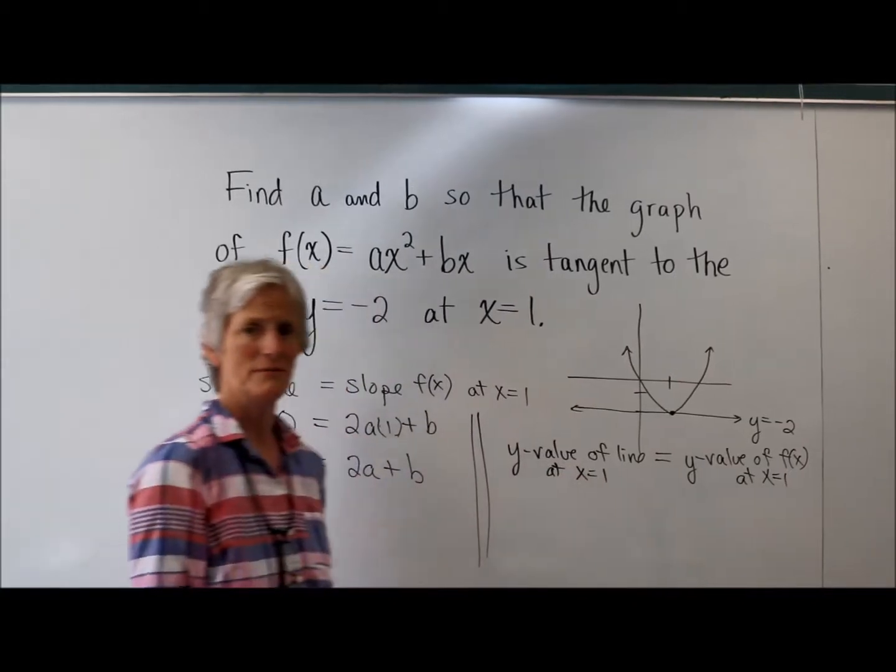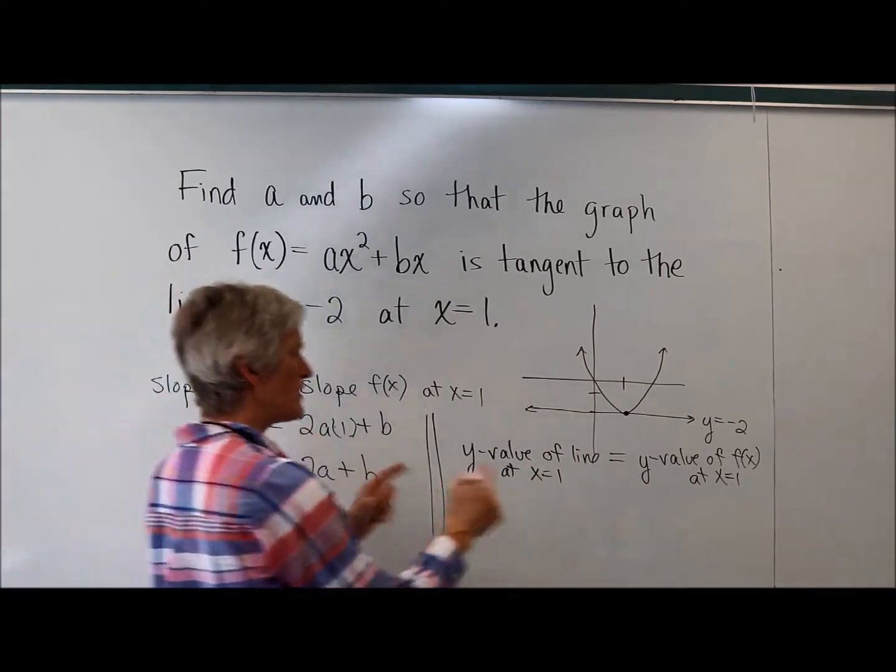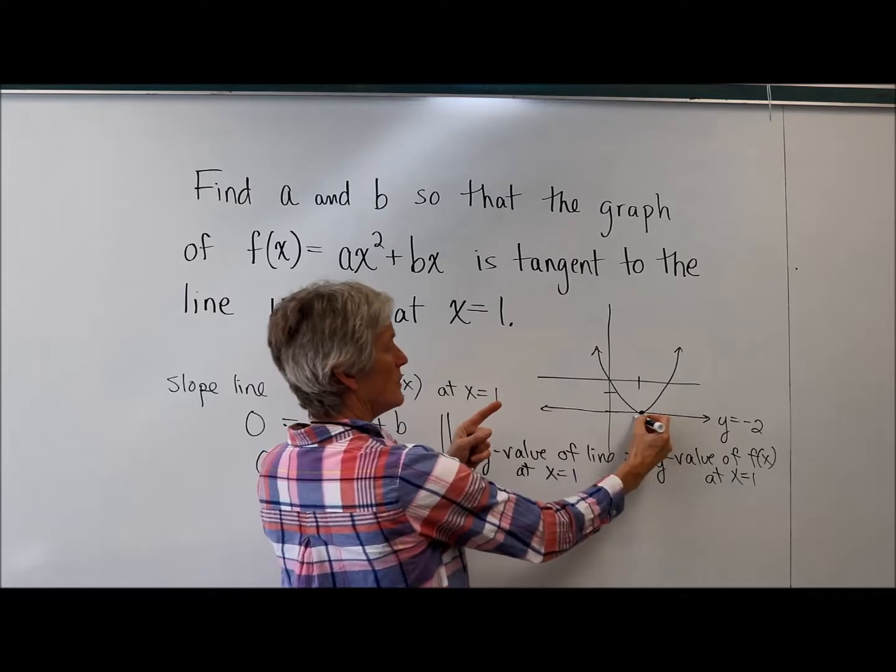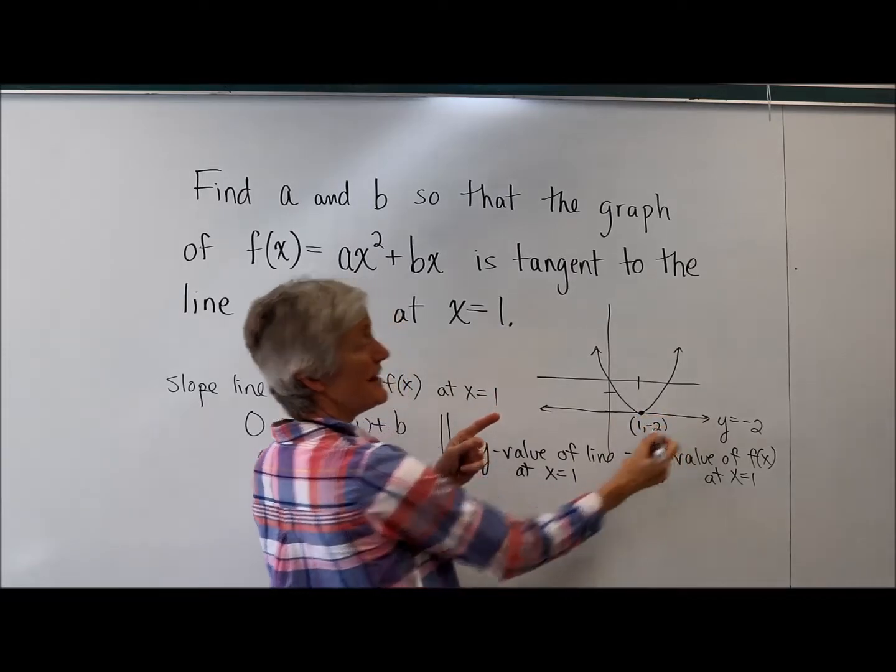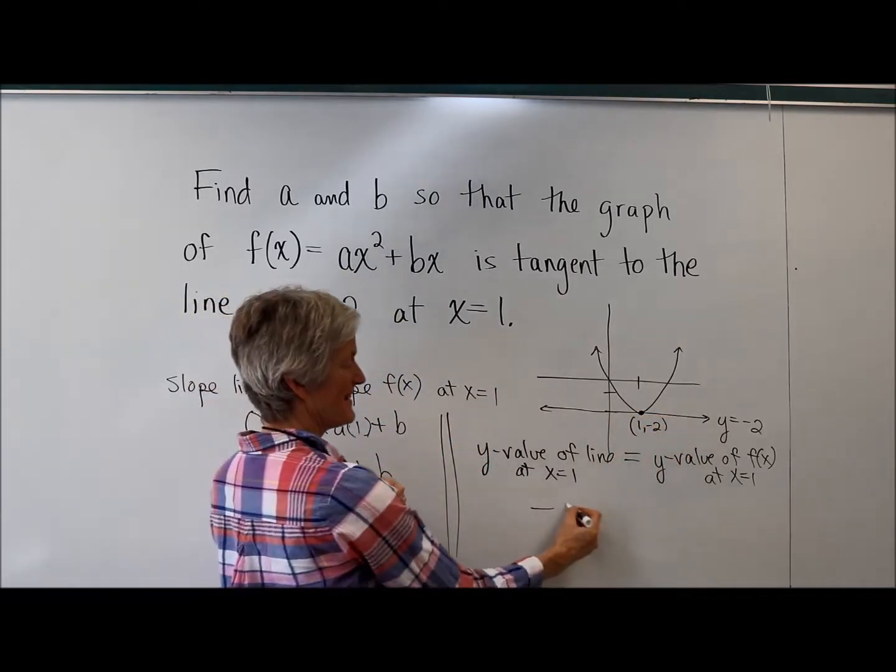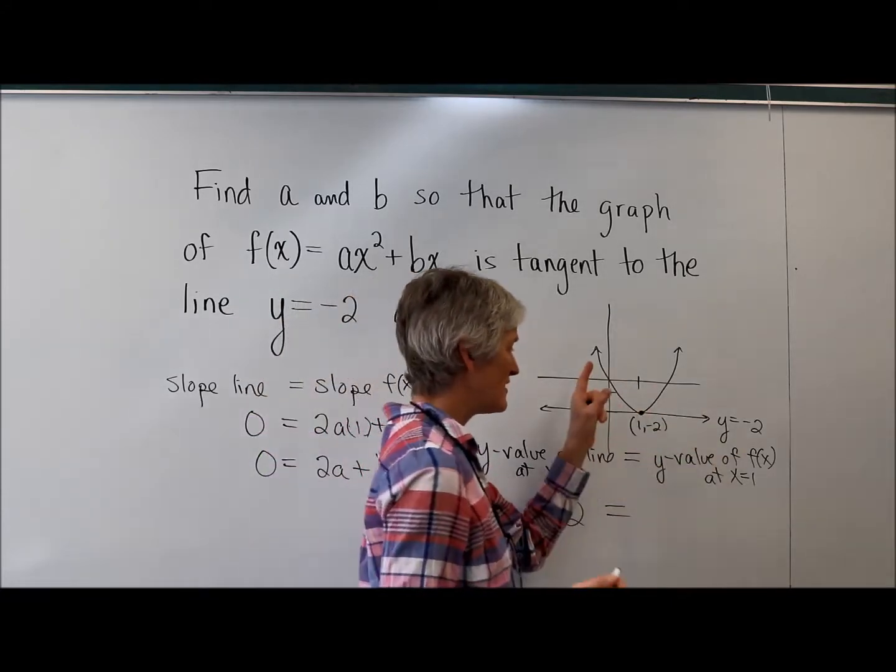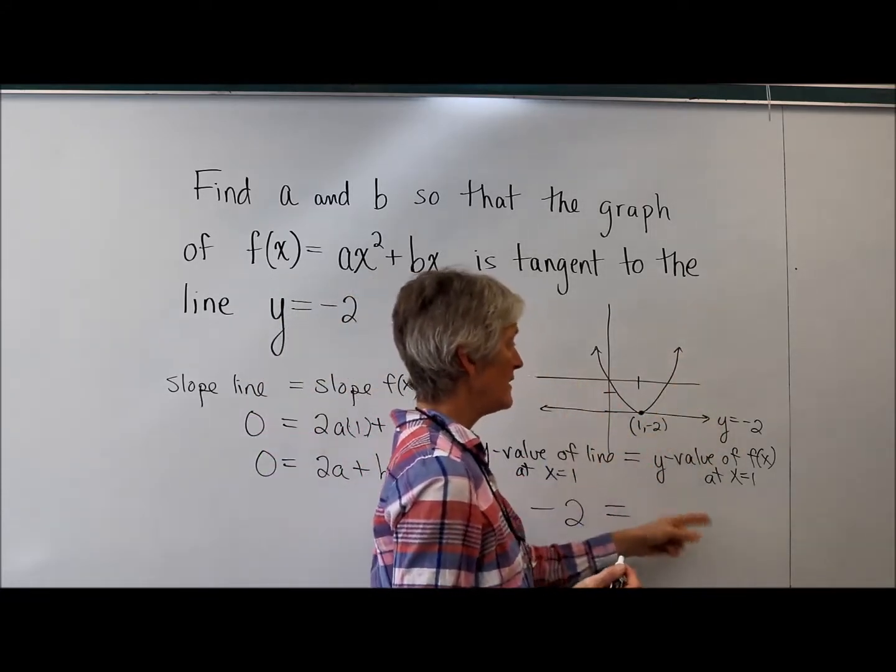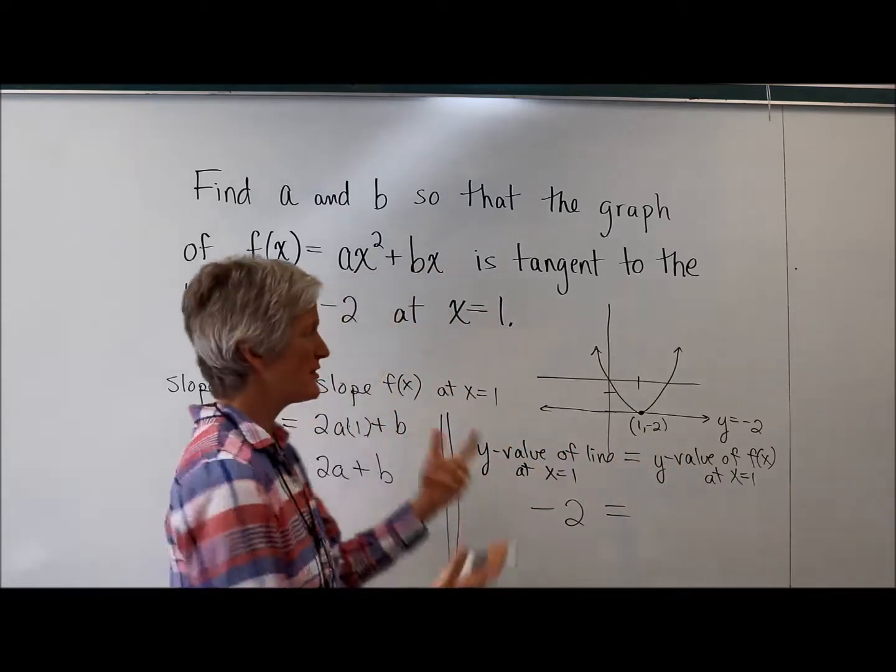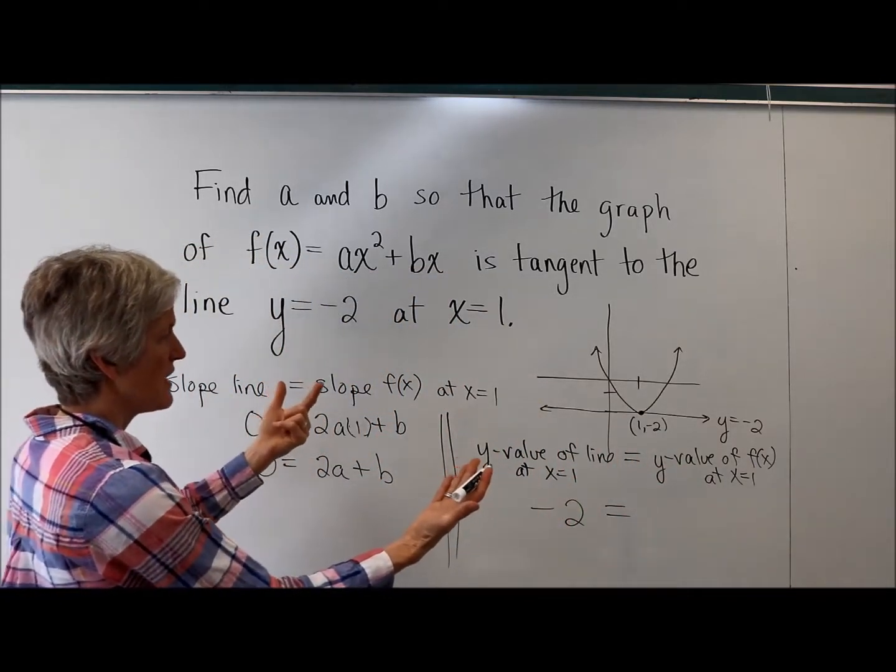That makes sense, right? Absolutely. Okay, the y value of the line at x equals 1 is, well, I guess it's got to be negative 2, right? It's pretty much negative 2 every place, I think. Yeah, I think it's everywhere. Okay, the y value of this quadratic is negative 2, but let's find a nicer way to express that.